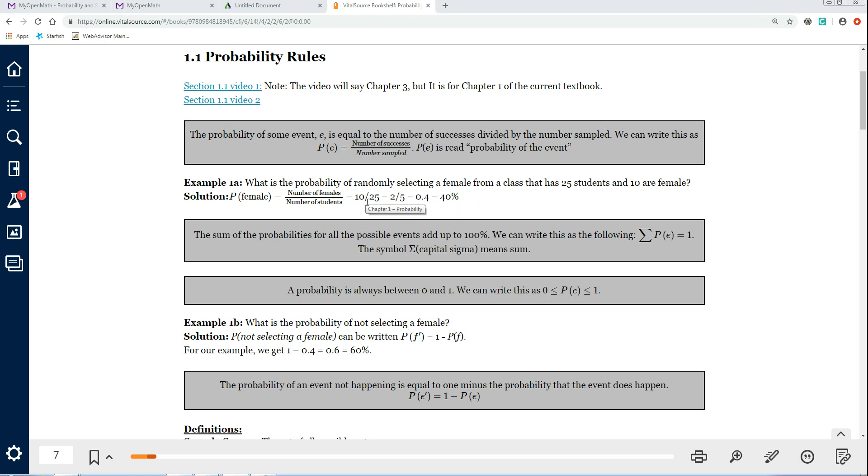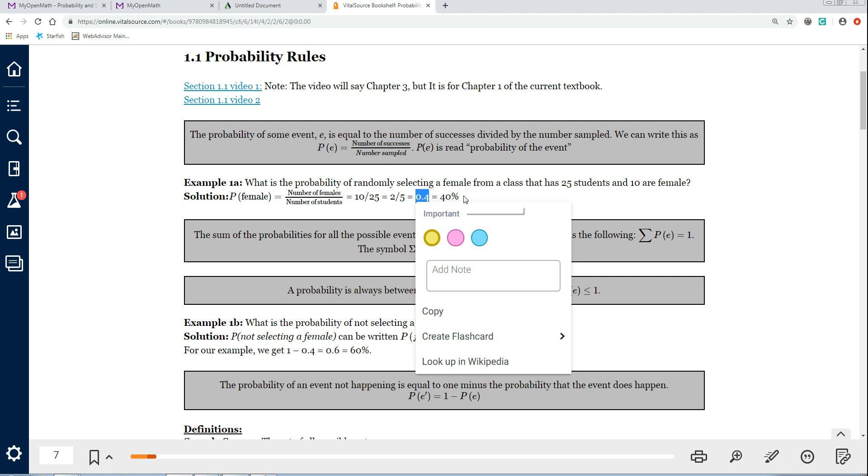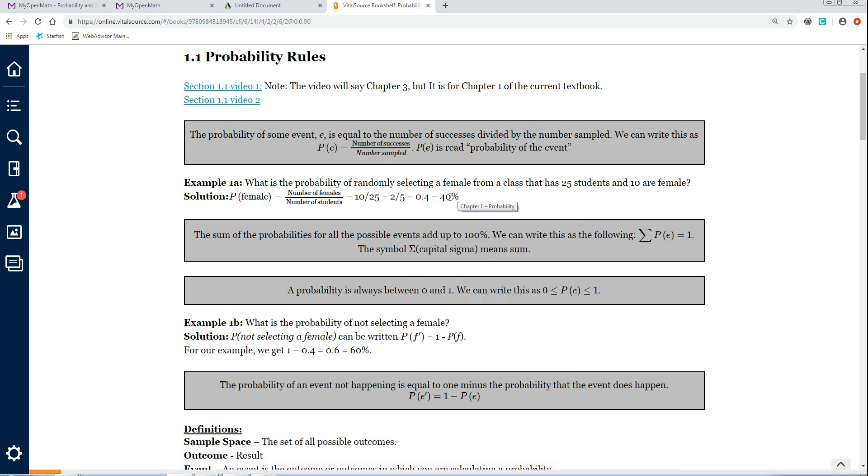Now, you can reduce that. 5 goes into 10 two times. 5 goes into 25 five times. So you get two-fifths. And if you take 2 divided by 5, you get 0.4. And 0.4 is the same as 40% because you can move the decimal point two places to the right to switch a decimal to a percentage. And that's critical to know. So if we move this two places right, we get 40%. Now, some questions will say write your answer as a fraction or a reduced fraction or a decimal or a percent. All these are equivalent. And sometimes the answer is it doesn't matter how you write it, but just read it and see how it wants you to write it. Most of the time, it's as a decimal, and fewer times it's as a percent or a fraction.